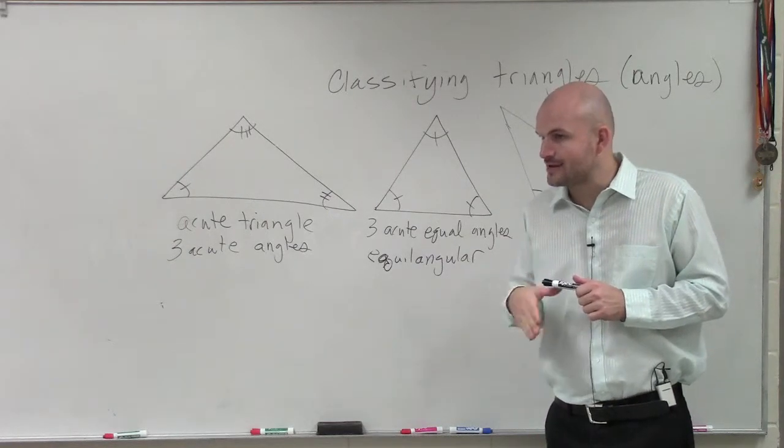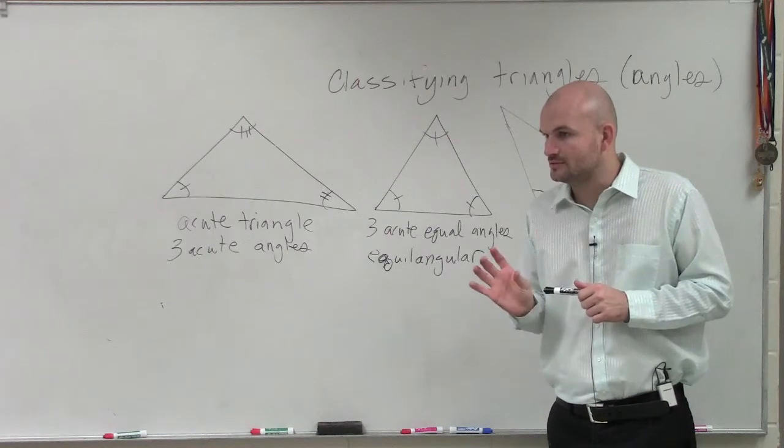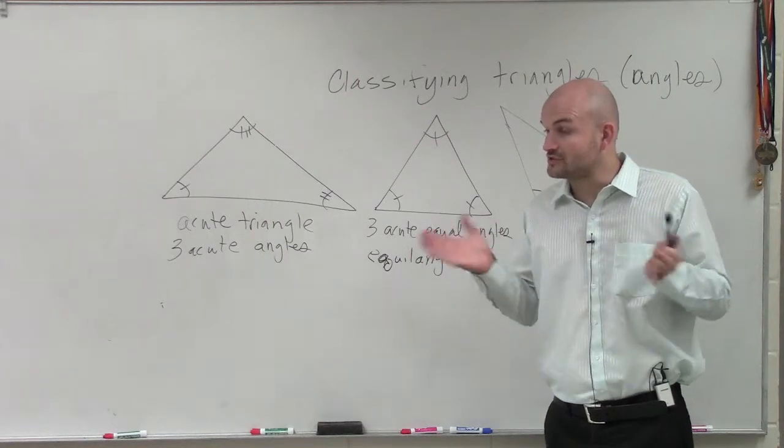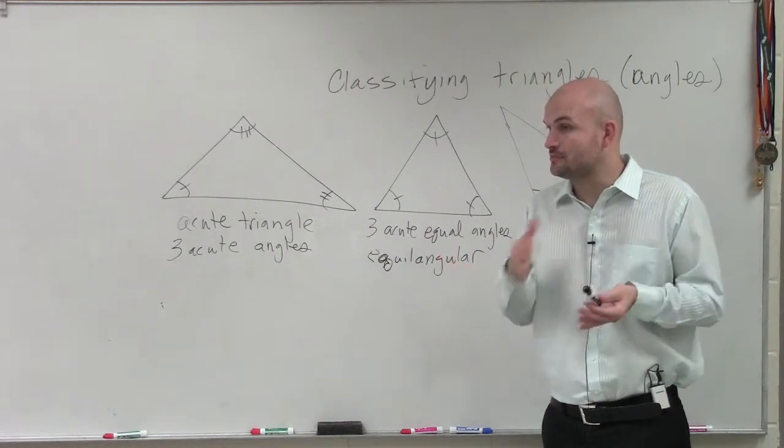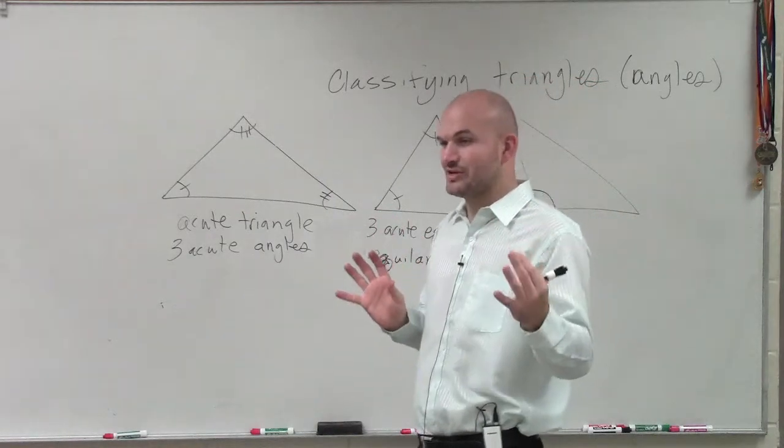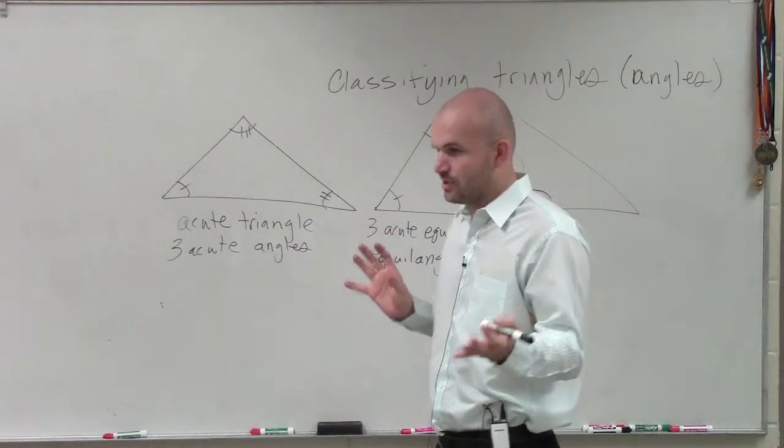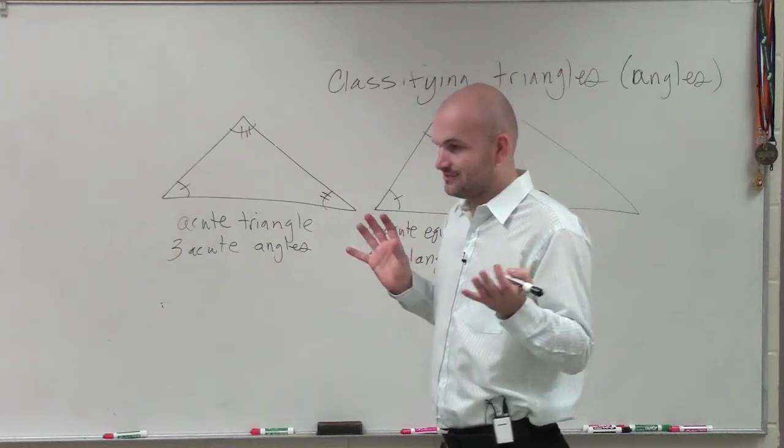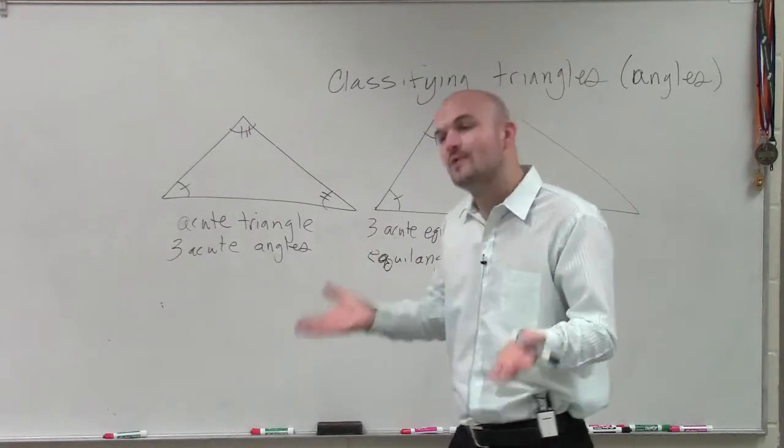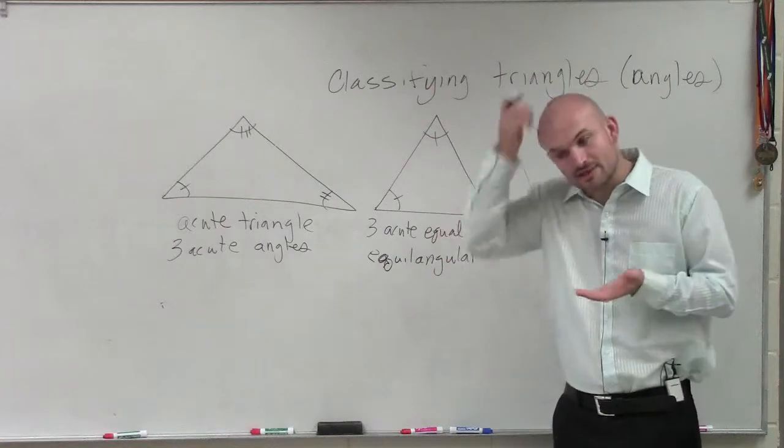So let's pretend this angle is 100 degrees. So if it has another obtuse angle, that means I have to add another angle that's larger than 90, correct? But what is the sum of all interior angles of a triangle? Close. Knock it down one. Triangle. Quadrilateral is 360 because it is composed of two triangles. So a triangle, the measure of all the interior angles is? Starts with a 1, ends with an 80. 180.